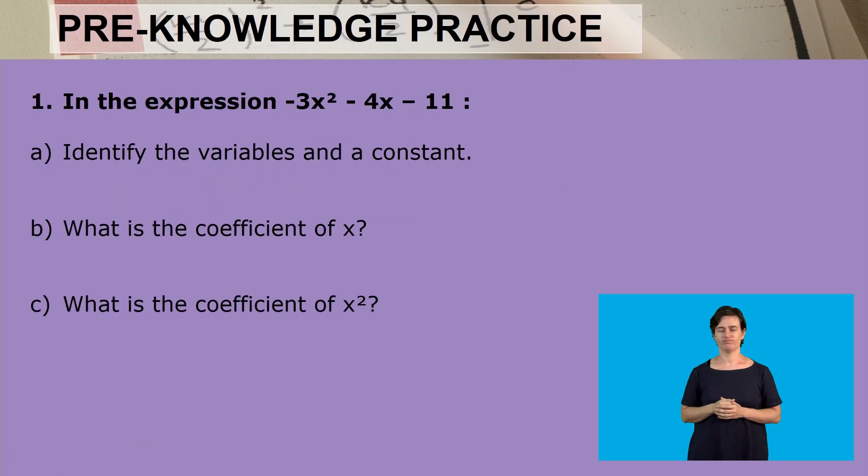Let's do a pre-knowledge practice. Our first question is: in the expression negative 3x squared minus 4x minus 11, identify the variables and constant. Our variable is x, and therefore even if we have x squared, the variable is just x. The constant is negative 11. What is the coefficient of x? The coefficient of x is negative 4, that is the number in front of x. What is the coefficient of x squared? It is negative 3.